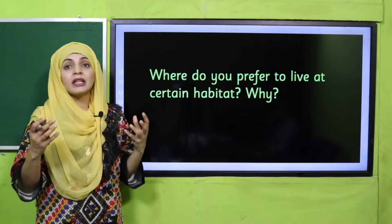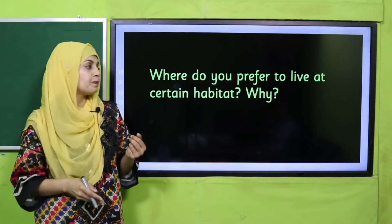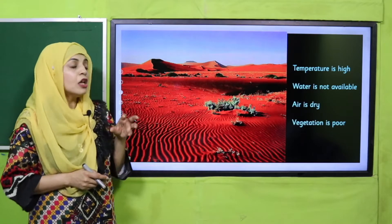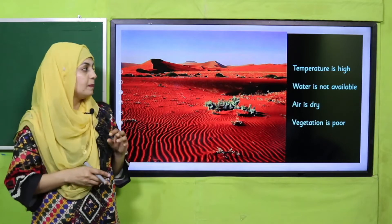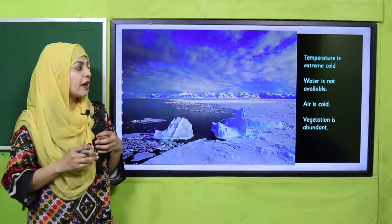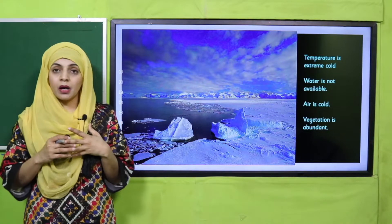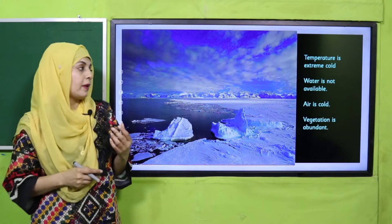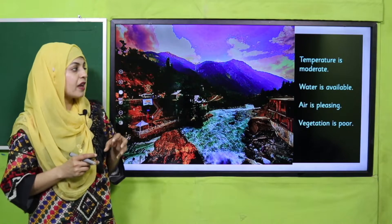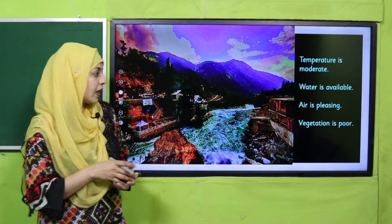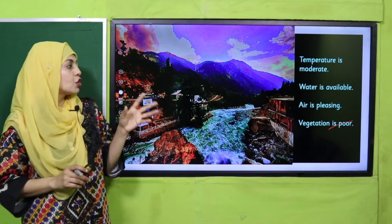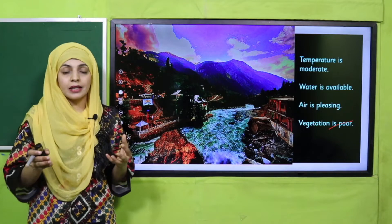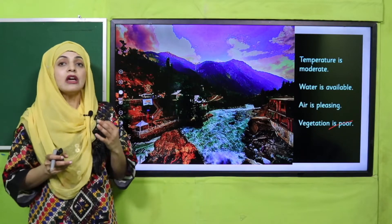Animals and plants always select the habitat where more necessities are available to them and they can grow properly. Where temperature is high, water is not available, air is dry, and vegetation is poor, very little life exists. Where temperature is extremely cold, water is not available, air is cold, and vegetation is not abundant, life is also very scarce. But where temperature is moderate, water is available, air is pleasant, and vegetation is abundant, life exists in greater quantity because all necessities to support life are present.